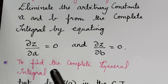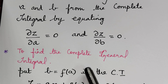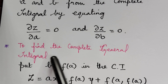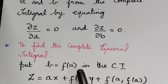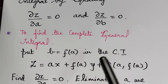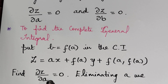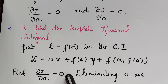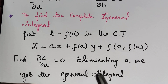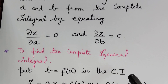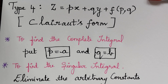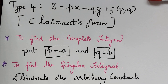The general integral is found in the same way as done previously — we take the second constant b to be equal to a function of a, substitute it in the complete integral, differentiate with respect to a, equate to 0, and eliminate a between those equations to find the general integral. This is the method of solving equations of Clairaut's form. We shall now begin with the problem.